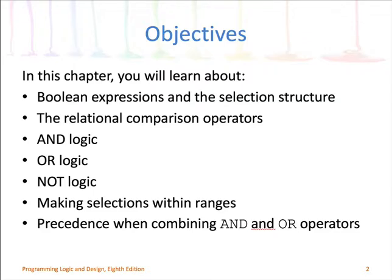They go along very closely with the selection structure that we were talking about in Chapter 3. We have relational comparison operators to compare values to each other. As far as logical operators, we'll start out talking about AND, OR, and NOT operators. Sometimes you need to make selections or decisions based on ranges. There is also precedence and associativity that we will need to deal with with the AND and the OR operators.